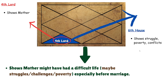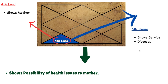The fourth lord shows your mother, and the sixth house shows struggle, poverty, and conflicts. When the fourth lord goes into the sixth house, it indicates that your mother may have had a difficult life — facing a lot of struggles and challenges. The financial condition before her marriage, when she was living with her parents, might not have been great. The sixth house is also the house of diseases and service, so there is a possibility of health issues for your mother, and you may have to put in your own efforts to serve or help her when she is sick.